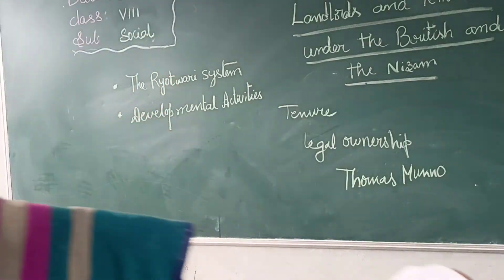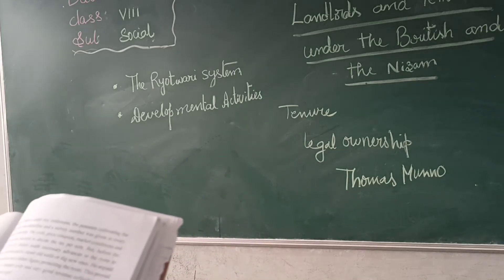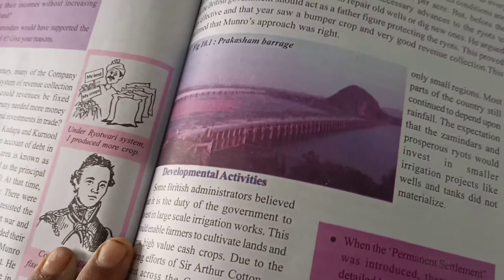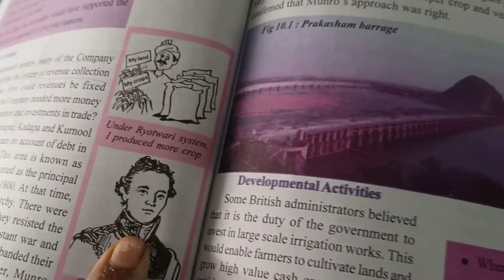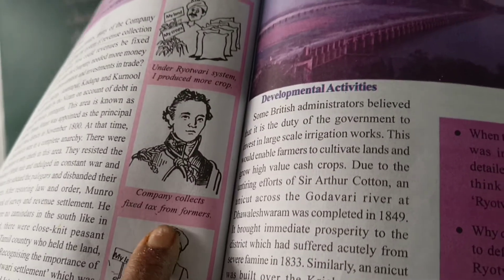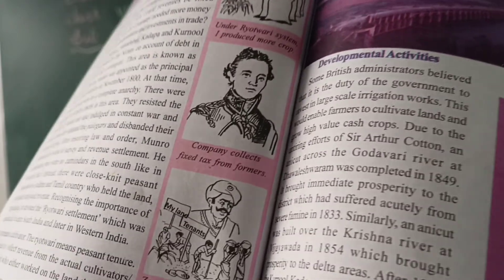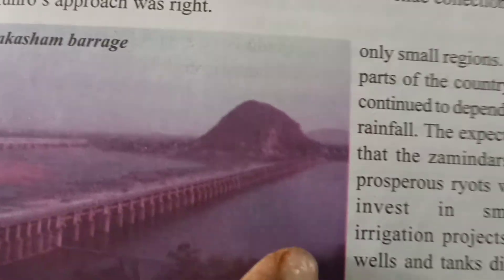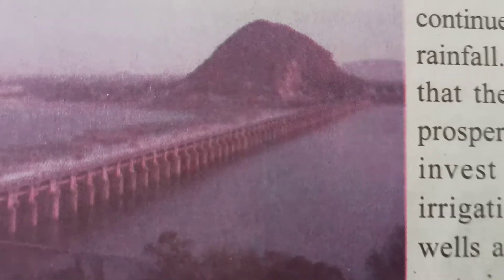Some more developmental activities were done in the country, still depending upon rainfall. Some British administrators believed that it is the duty of the government to invest in large-scale irrigational works. This would enable farmers to cultivate lands and grow high-yield varieties and valuable cash crops.